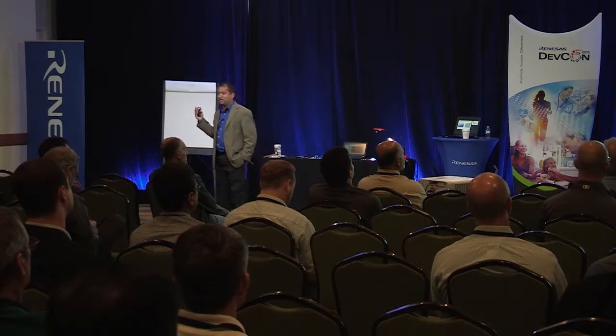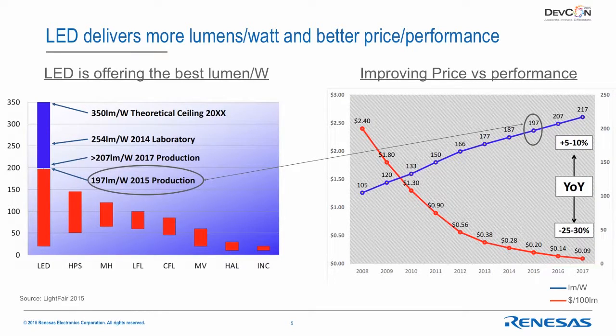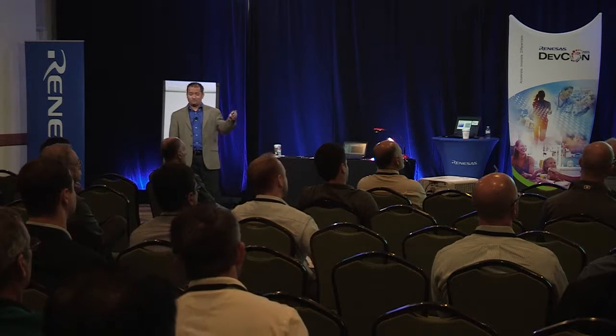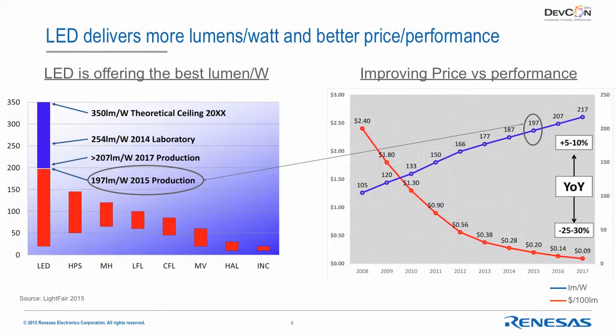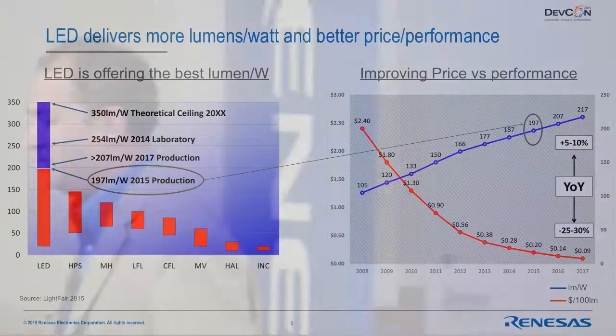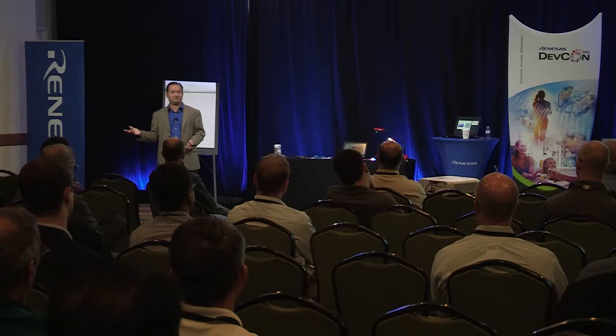LED today offers the most lumens per watt and the best price per watt. Lumens is a measure of the light output power from the lamp. Looking at the chart, LED is already the most energy-efficient lighting, and there's still more to go. Performance is improving 5% to 10% every year, but the price is falling 25% to 30% a year. I used to buy an LED bulb for $20 two years ago — now I can buy one for $6. The economics of adopting LED lighting are becoming easier and easier.